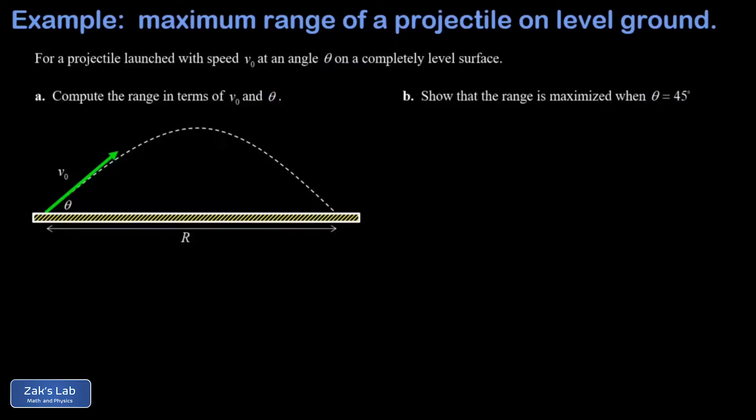In this video we're solving the general problem of how to find the range for a projectile launched on a level surface. Everything we deduce here applies only to a completely level surface. First, we want the range in terms of the launch speed and the launch angle, and we take the usual approach.